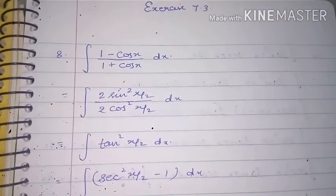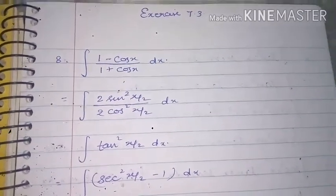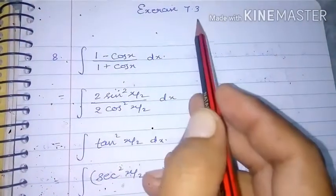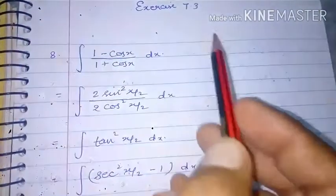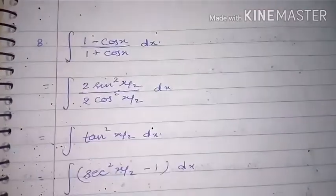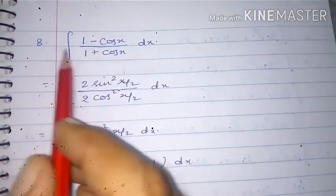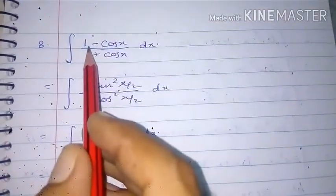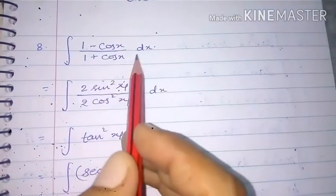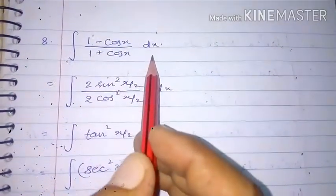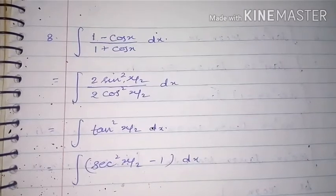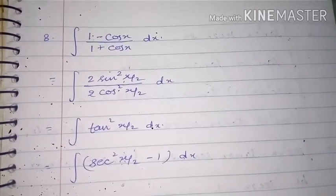Hello students. In this video we are going to discuss some more questions of exercise 7.3 related to the topic of integration. In this question we have to integrate (1 - cosx) divided by (1 + cosx) dx using trigonometric identities.